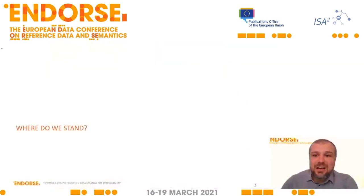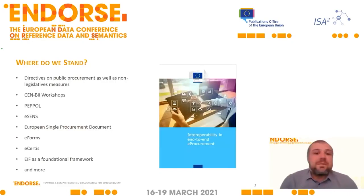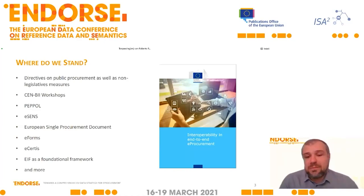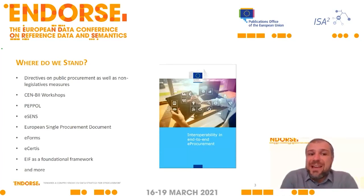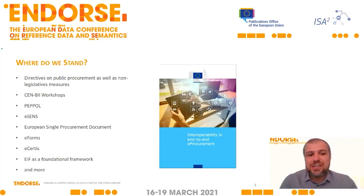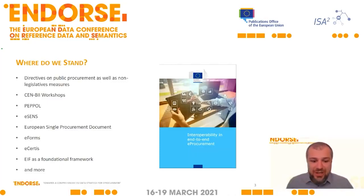Let's start with a couple of minutes to describe the point where we stand now. We have been working on the e-procurement strategy for years, with a lot of projects starting from the directives, then going through the BII workshop, the ESPD, the e-forms which will be mandatory in two years, eCertis, and so on. There is a foundational layer, which is the European Interoperability Framework (EIF), which in my opinion is the very foundation for every data initiative in the EU. The European Commission has put forth a lot of effort, and there is this beautiful book available on the website of the Publications Office about what has been done and where we will move.